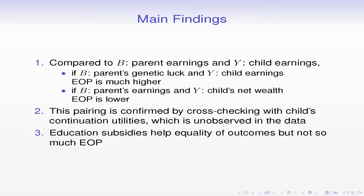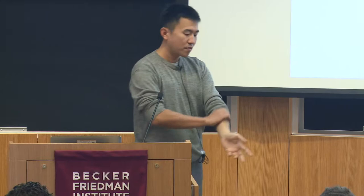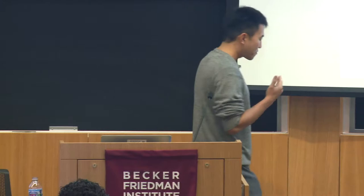How do I confirm this pairing is appropriate? You can't really do this in the data, but in our model we can directly look at the continuation utilities of individual agents. I'll show visually and with Theil indices that conditional distributions of child's net wealth conditional on parental earnings look very similar to conditional distributions of the child's continuation utilities conditional on parental earnings. This confirms we're looking at the right objects—child welfare in terms of utilities, not just economic measures like income or wealth.